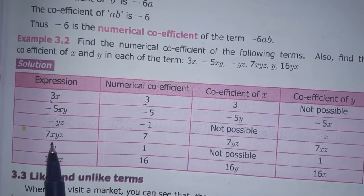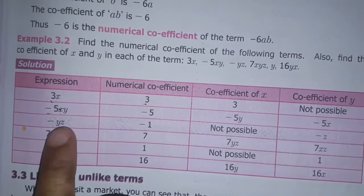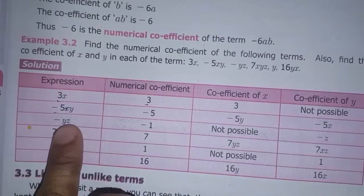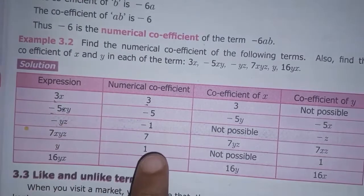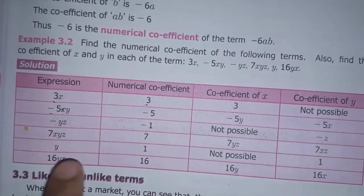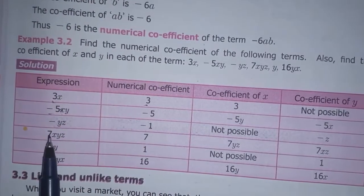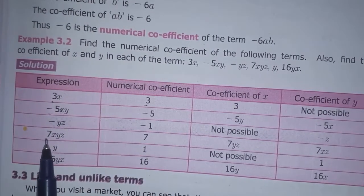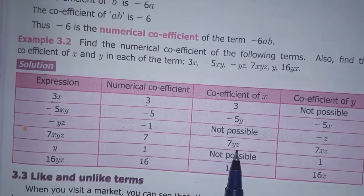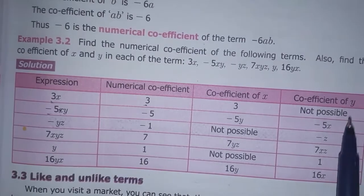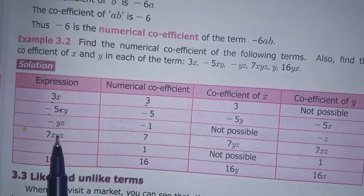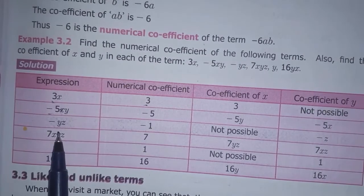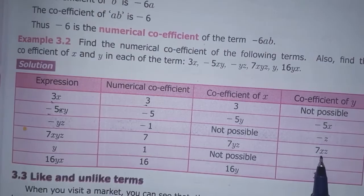For 7xyz: numerical coefficient is 7. Coefficient of x — the remaining factors give 7yz. Coefficient of y — the remaining factors give 7xz.